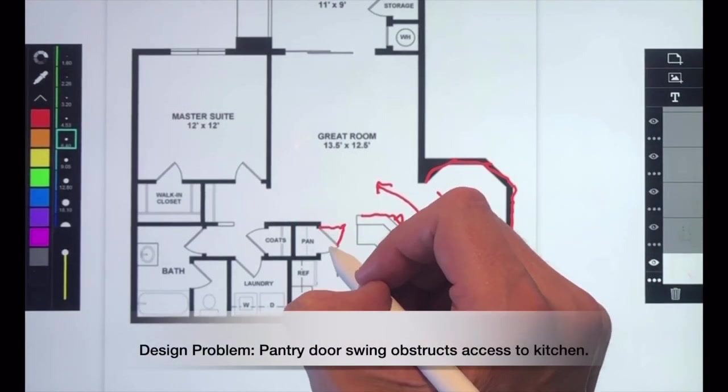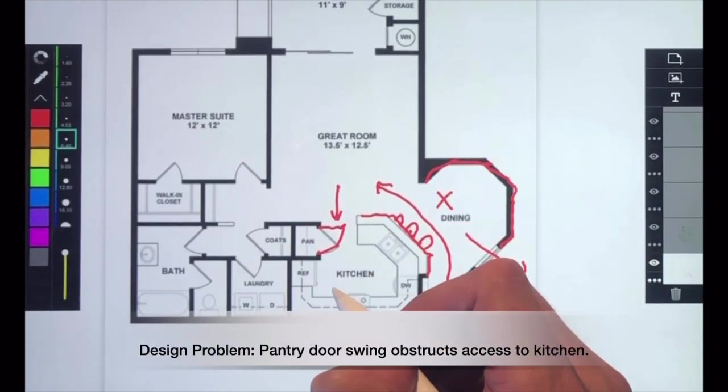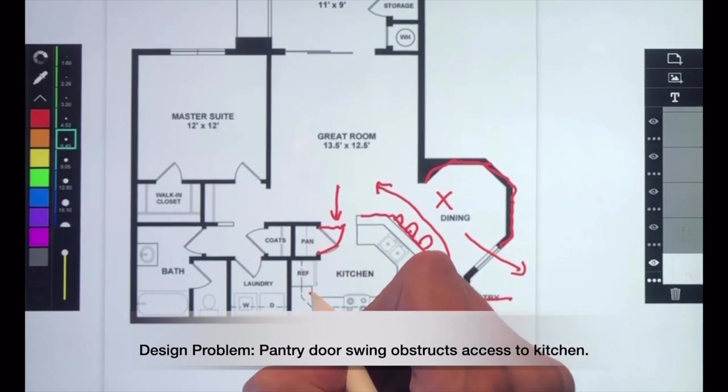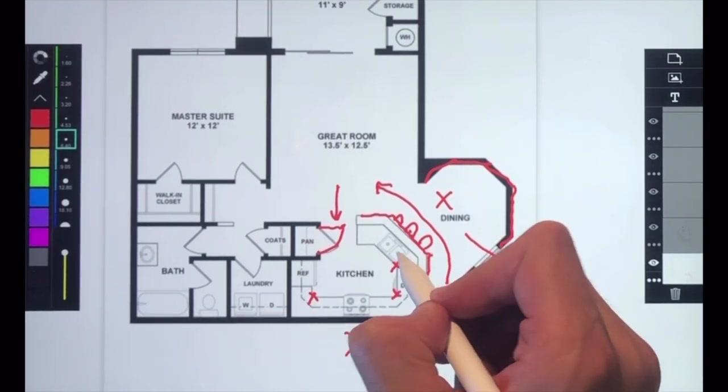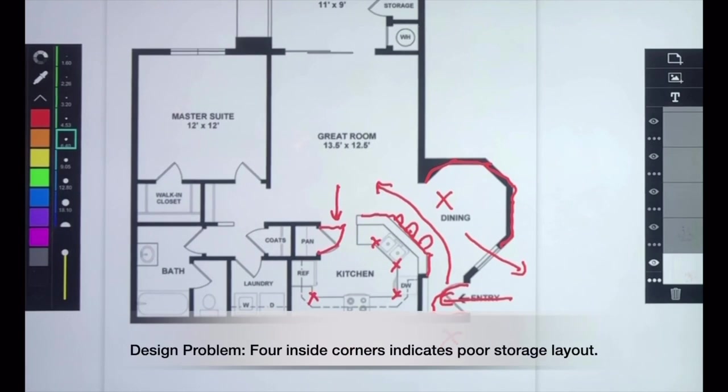The door to the pantry swings out and it basically obstructs the entry into the kitchen. And there's not one, not two, not three, but four inside corners, which means there's going to be very limited storage within this kitchen. Terrible design.